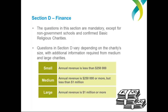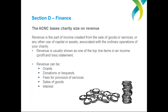The ACNC bases charity size on annual revenue. It's important your charity knows the difference between revenue and income here. Revenue is usually shown as one of the top line items in an income, profit and loss statement. It can be made up of grants, donations or bequests, sales of goods, interest or fees for service provision.